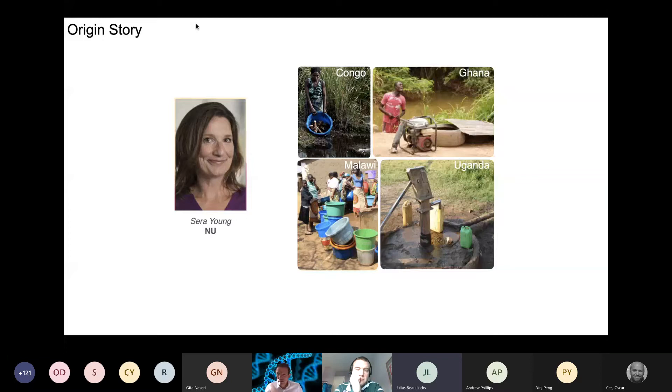The origin story for why we're interested in water comes from actually another professor at Northwestern, Sarah Young, who works in the area of water insecurity. And these are some photos of her research highlighting some of the issues that many around the globe face with access to clean water, often faced with the decision of going to a relatively local source but maybe of questionable quality, or spending additional time, resources, transportation to go to a cleaner source that might be farther away. And part of the issue here is it's hard to assess water quality, so it's hard to make the right decisions in that case.